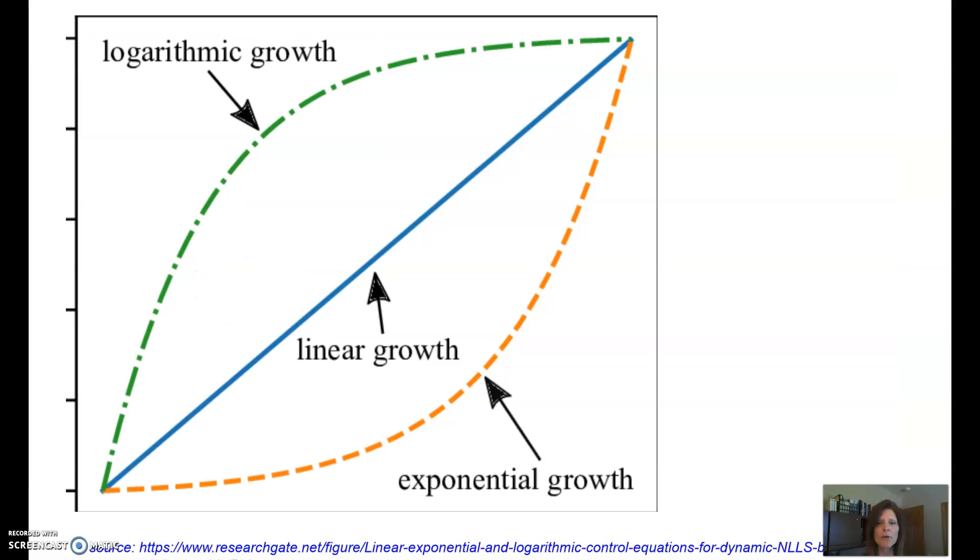Okay, different types of growth. We can have linear growth, exponential growth, or logarithmic growth. Linear growth is steady and constant amount of change.